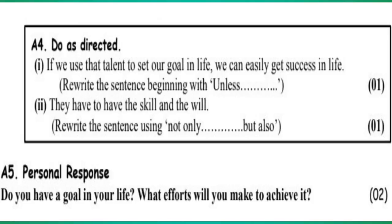A4: Do as directed. 1. 'If we use that talent to set our goal in life, we can easily get success in life.' Rewrite the sentence beginning with 'Unless.' 2. 'They have to have the skill and the will.' Rewrite using 'not only but also.' A5 Personal response: Do you have a goal in your life? What efforts will you make to achieve it?